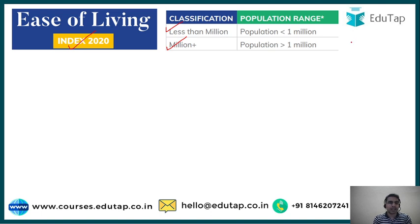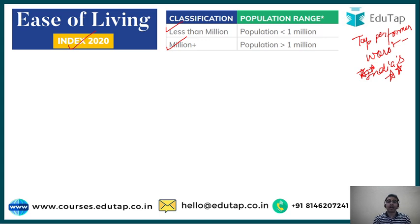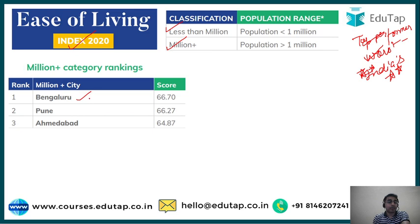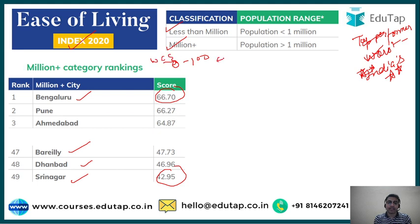When covering rankings, you must note the top performer, the worst performer, and India's rank — though since this is a cities-based index, focus on top and worst performers. Under the million-plus category, Bengaluru has topped the index with a score of 66.70, followed by Pune and Ahmedabad. The worst performers are Srinagar with a score of 42.95, followed by Dhanbad and Bareilly. Cities are scored on a scale of 0 to 100, where 0 is the worst and 100 is the best.